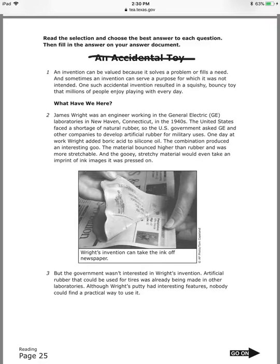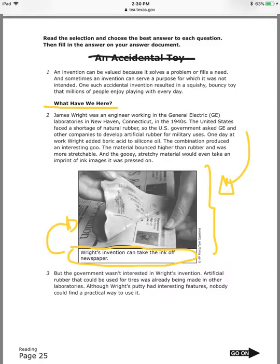The title is 'An Accidental Toy' — I think this is going to be informational. There is a subtitle. I have a photo, and the caption says Wright's invention can take the ink of a newspaper. So this paragraph should be talking about this. It's an invention that was accidental and became a toy. Let's read it.